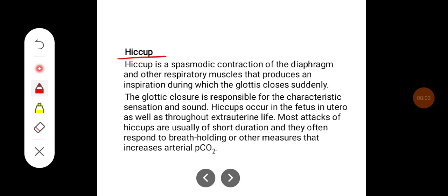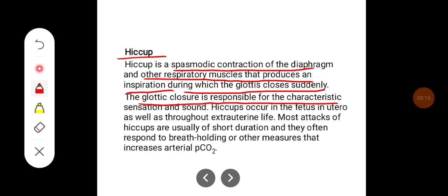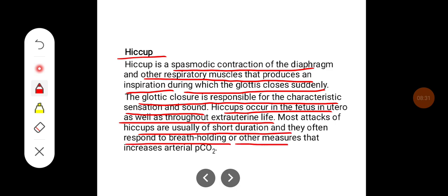Hiccup is a spasmodic contraction of the diaphragm and other respiratory muscles that produces an inspiration during which the glottis suddenly closes. The glottic pressure is responsible for the characteristic sensation and sound. Hiccups occur in the fetus in utero as well as throughout extra-uterine life. Most attacks of hiccups are of short duration and often respond to breath holding or other measures that increase arterial pCO2.